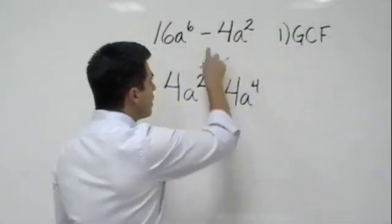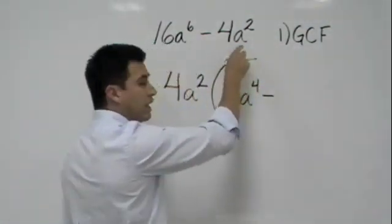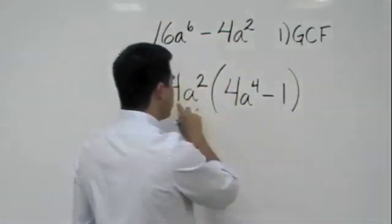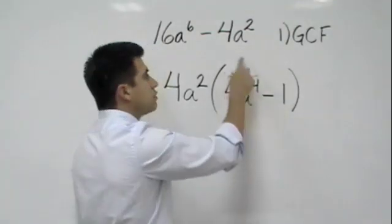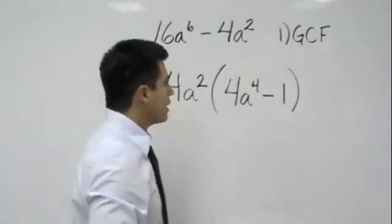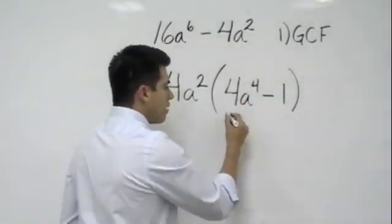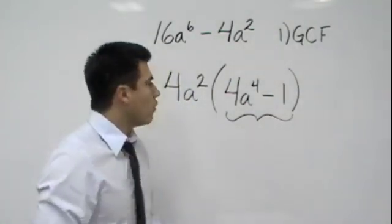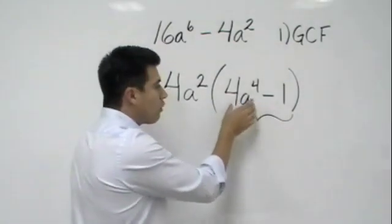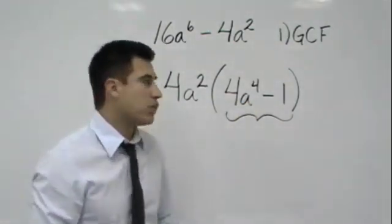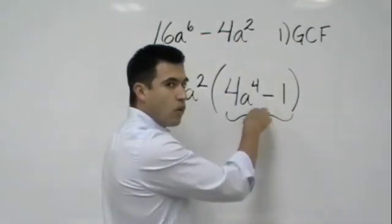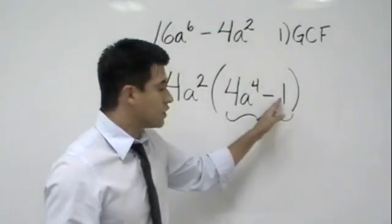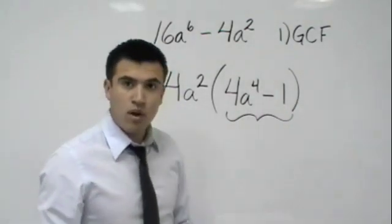And then, we bring down the minus sign, and since we took out a 4a squared, we put a 1, because 4a squared times 1 gives me 4a squared. Now, we factor this. We want to look in here to see if that's a difference of squares. Well, 4a to the fourth power is a perfect square. There's a minus sign, so all we need now is to make sure the next term is a perfect square. And 1 is a perfect square, because the square root of 1 is 1.